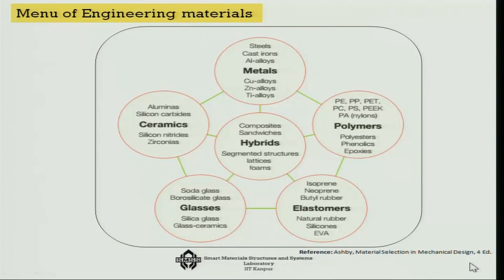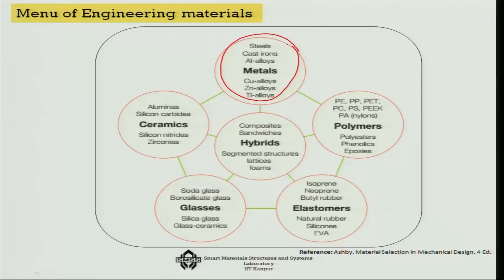Let us try to classify them. There is the very famous pentagon developed by Ashby — you will see it in his book 'Material Selection in Mechanical Design' — where he has given nice circles of materials. For metals, for example: steel, cast iron, aluminium alloys, copper, zinc alloys, titanium alloys. Let us explore the vertices one by one — metals together as one group.